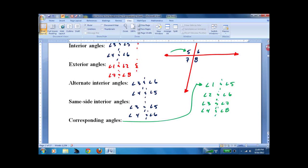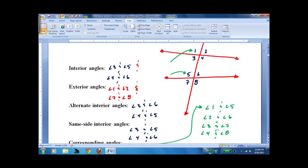That's it. So what that means is if I took this whole thing and I picked it up and dropped it down, these angles would fall on top of each other. And again, we'll get back to that in more detail when we do parallel lines.